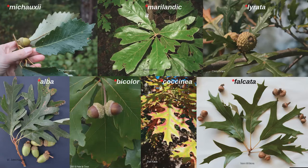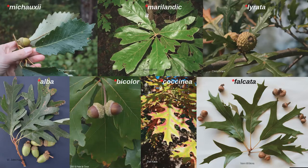Quercus michauxii is called the swamp chestnut oak, also called the basket oak because its wood was used to make basket splints. It grows 40 to 60 feet in full sun, likes medium to wet soil. Acorns are not produced for a long time — in the case of michauxii it's 20 to 25 years. Interestingly, these acorns vary in taste; you can eat them directly off the tree — some may be bitter depending on tannic acid, but some are sweet. The trees usually have dark red fall color, the wood is durable, and there are no serious pests.